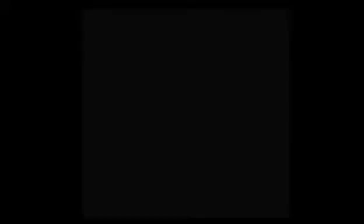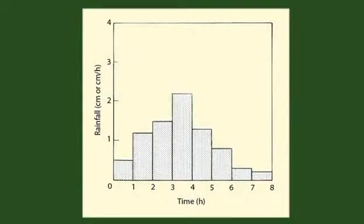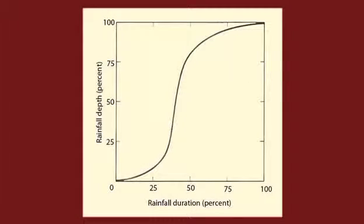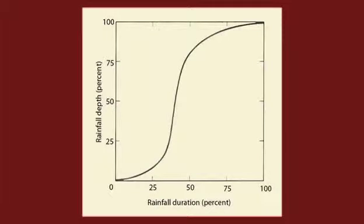The variation of storm depth within the event duration is depicted by the Temporal Rainfall Distribution. The discrete form is the Hyetograph, and the continuous form is the Temporal Rainfall Distribution. This can be expressed in dimensionless form, where a storm type is a dimensionless temporal rainfall distribution.